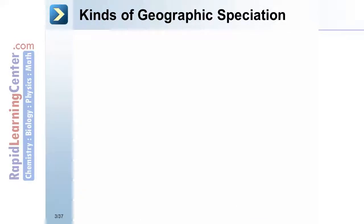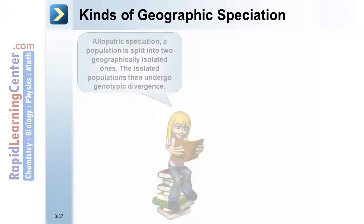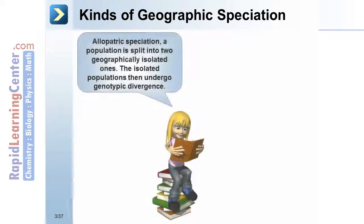Allopatric speciation occurs when a population is split into two geographically isolated ones. The isolated populations then undergo genotypic divergence.